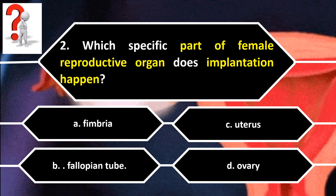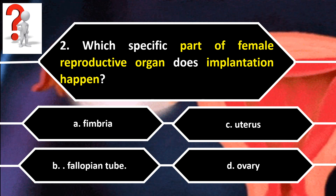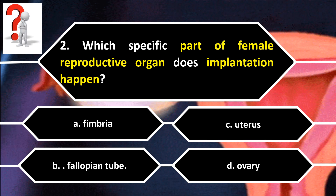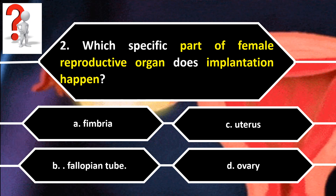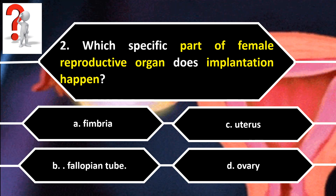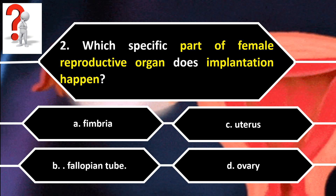Number 2. Which specific part of the female reproductive organ does implantation happen? A. Fimbria. B. Fallopian tube. C. Uterus. D. Ovary.